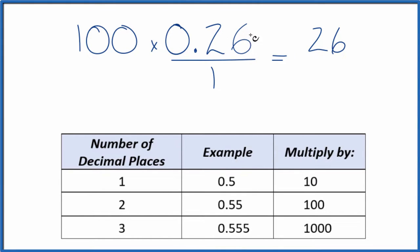But we can't just multiply the top. We have to multiply the bottom by 100 as well, because 100 over 100 is just 1, so we're not changing the value, just the way it's represented. So 100 times 1 equals 100, and now we have a fraction, 26 over 100.